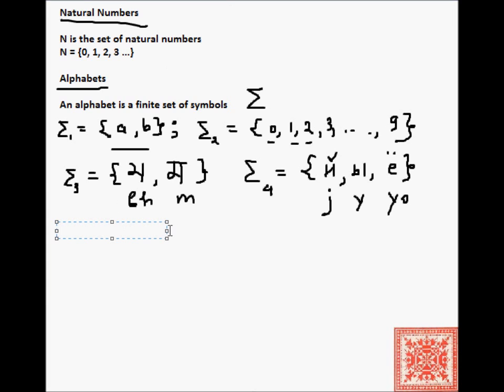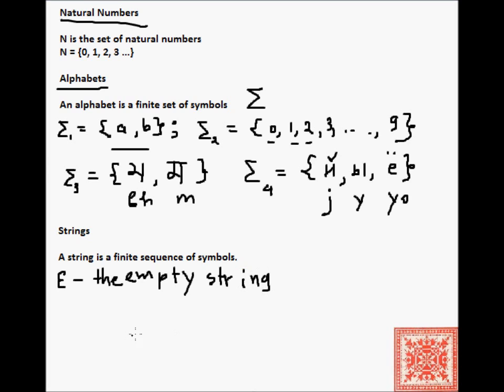Natural numbers, alphabets. Once we have an alphabet, the next construct is the concept of a string. A string is a finite sequence of symbols. The emphasis is on the word finite and on the word sequence. The order of those symbols does matter. An alphabet is a finite set of symbols - the order doesn't really matter. But a string is a finite sequence of symbols. The Greek letter epsilon stands for the empty string, a string with no symbols. In computer science terms, it's a string with no characters.